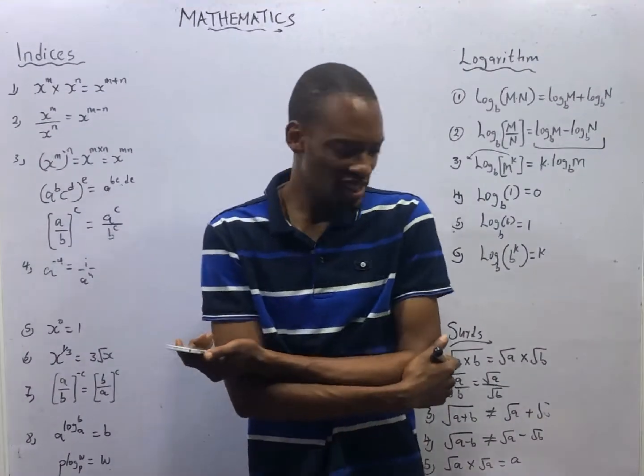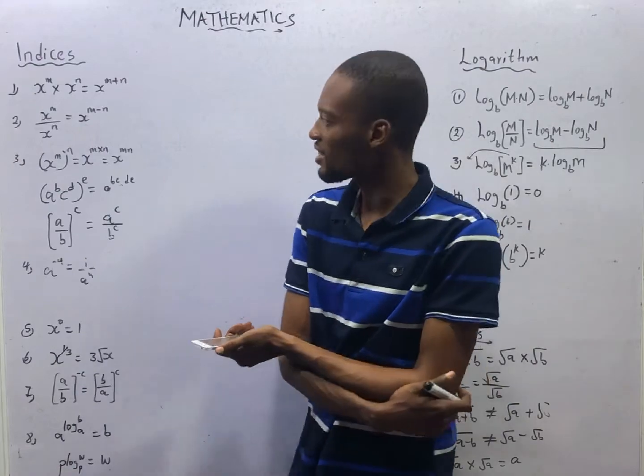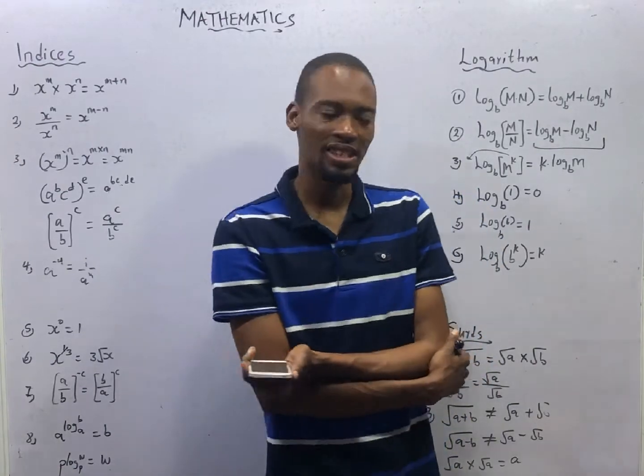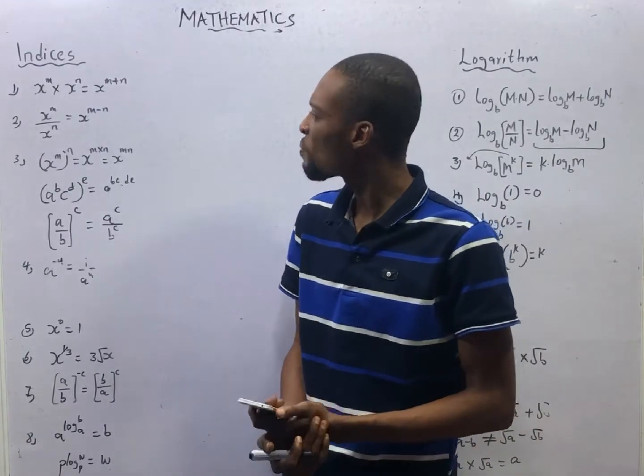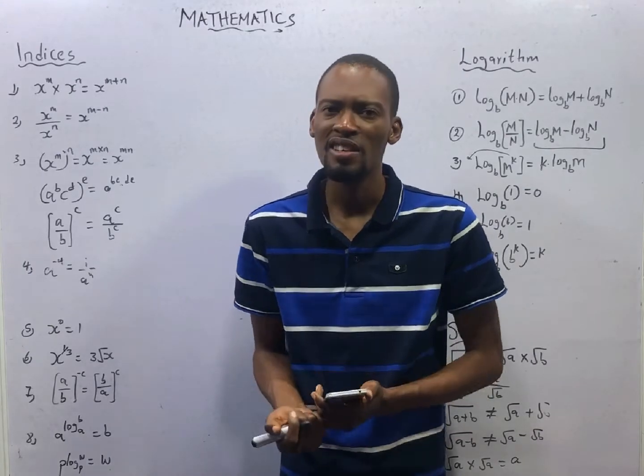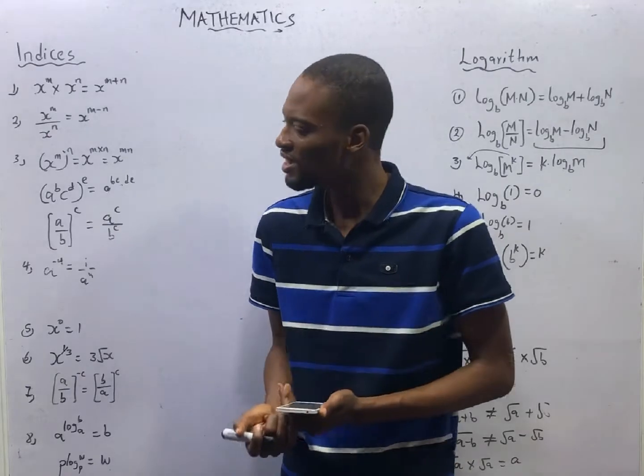This is episode number 19 of the 120 days to jam mathematics with Flash Isaac. In this episode, we shall be rounding off indices, logarithm and surds. We have been looking at this topic since episode 15. We continued with episode 16, episode 17, we did the same. Episode 18, we did the same.